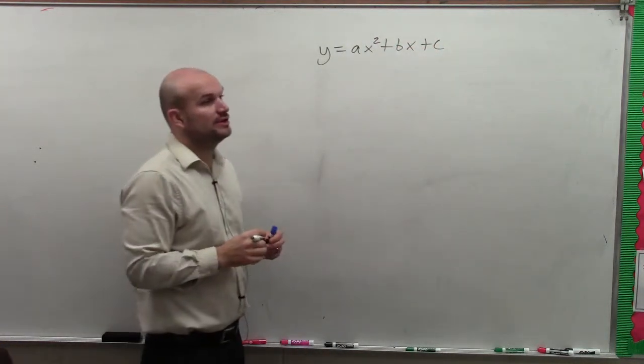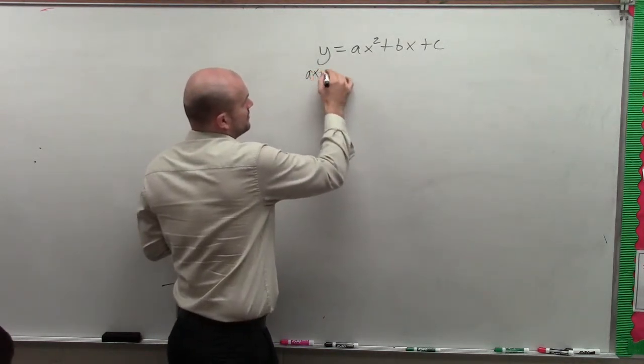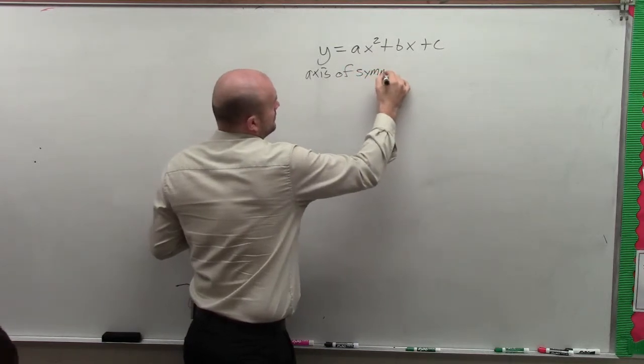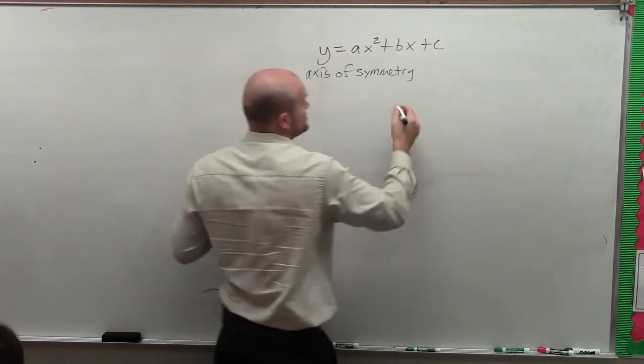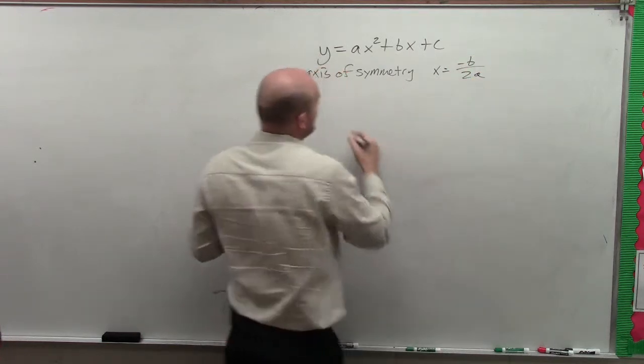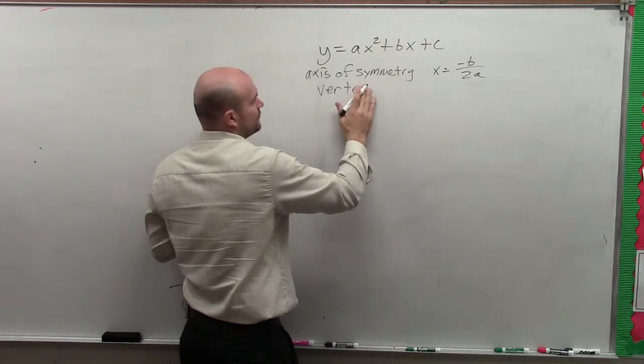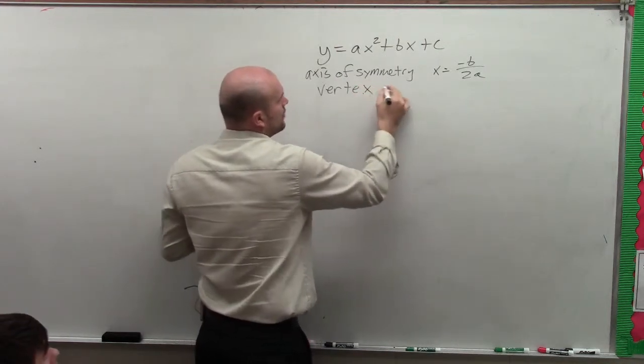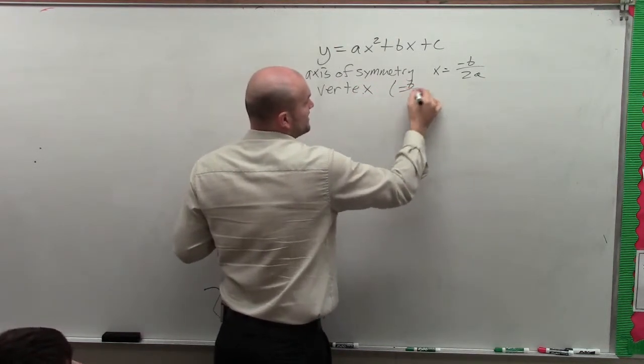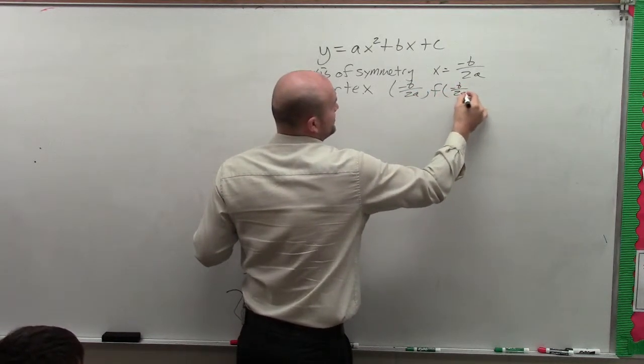And then from there, we learned to identify the axis of symmetry, which was x equals negative b divided by 2a. And then we learned how to identify the vertex, which was the coordinate point negative b divided by 2a, comma, the function f of negative b divided by 2a.